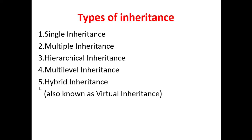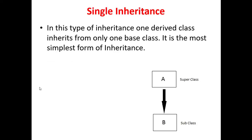Starting with the first one — single inheritance. It is the simplest type of inheritance in which one derived class inherits from only one base class. For example, subclass B is derived from superclass A, making it a one-to-one relationship. Such type of inheritance is called single inheritance.